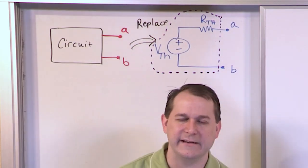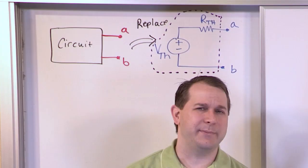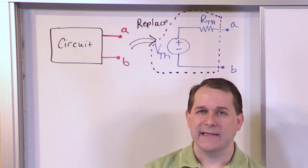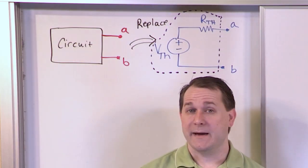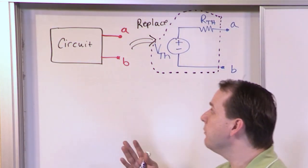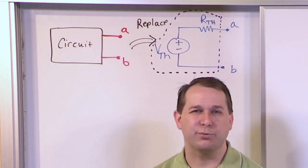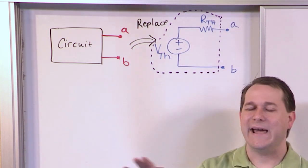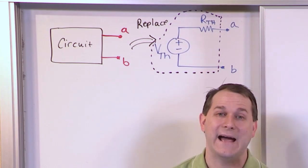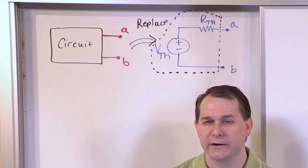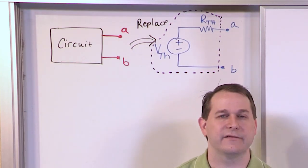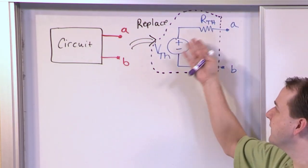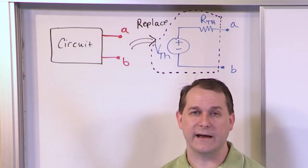When you think about it, that is amazing. You can have 39 current sources all connected in a crisscross spaghetti network with lots of resistors going everywhere — it may be hard to analyze — but any resistive network like that can always be rewritten in terms of a single resistor and a single source. And as a foreshadowing: when we get to AC, to alternating current, and when we have inductors and capacitors in addition to resistors, the Thevenin theorem still holds. The box can contain inductors and capacitors, and we'll still be able to write a simplified circuit that models the box precisely.